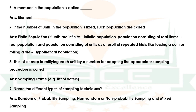Note that if the units are infinite, such a population is called an infinite population. A population consisting of real items is called a real population. A population consisting of units as a result of repeated trials, like tossing a coin or rolling a die, is called a hypothetical population.